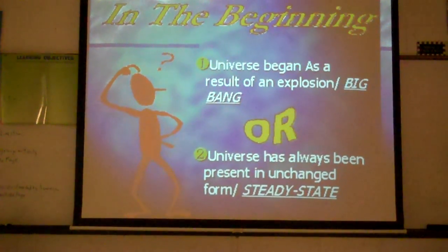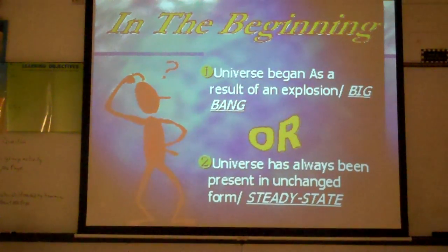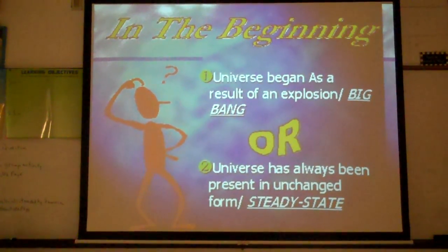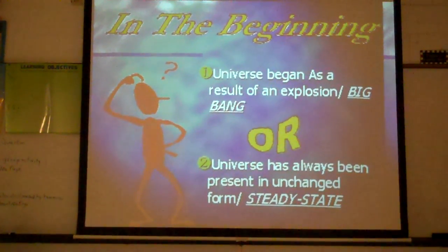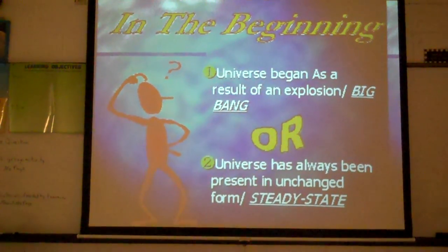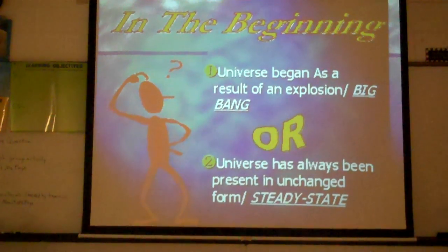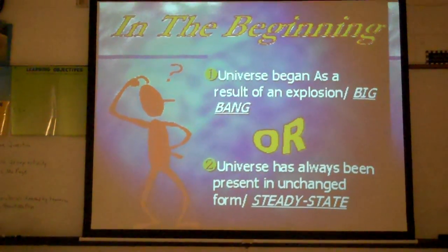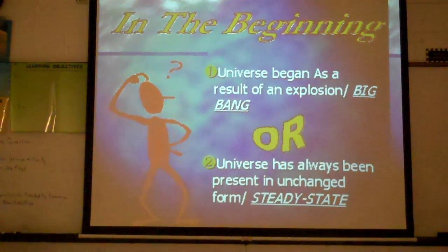This slide is the steady state versus the Big Bang Theory. Number one covers the Big Bang, and number two covers the steady state theory. The steady state theory explains that the universe has always been present in an unchanged form — the universe expands at a uniform rate, there is no beginning or end, and the universe is unchanged.